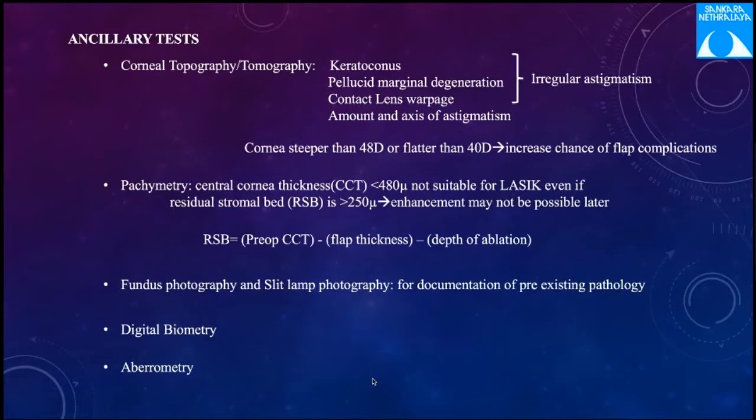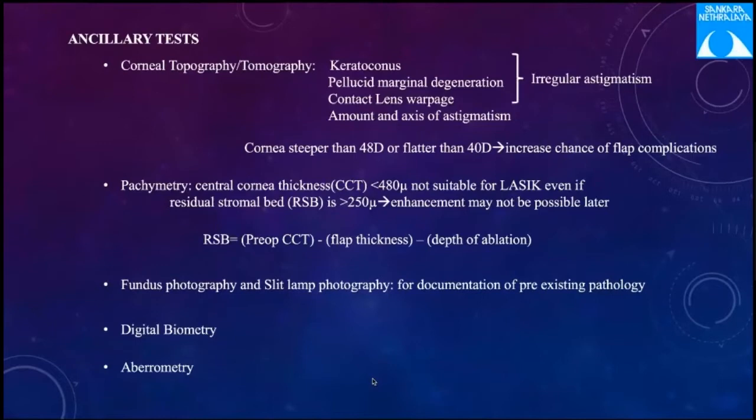Corneal topography and tomography should look for any source of irregular astigmatism such as keratoconus, PMD, and contact lens warpage. The topography also gives us the amount and axis of astigmatism. A gross deviation between this and the manifest refraction means we should re-check our manifest refraction. Corneas steeper than 48 diopters or flatter than 38 diopters have an increased risk of flap complications.